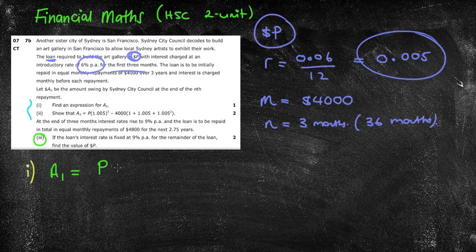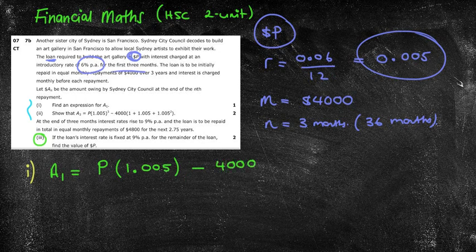The first question says to find an expression for A1. So we are borrowing P dollars, we've got our interest rate of 0.005, so 1.005, which is my 100% plus that extra 6% over the 12 months. Now after we borrow that amount and we've been charged this interest, we're then going to make a repayment of that $4,000. So that is going to simply be my expression for A1.